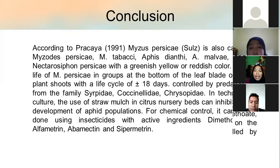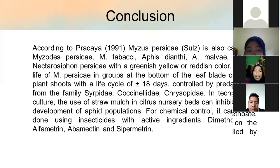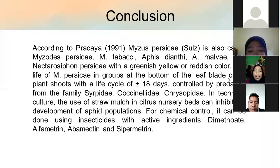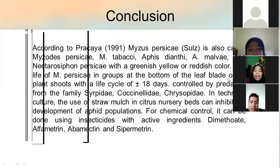Conclusion: According to Pracaya, Myzus persicae is also called Myzus tabaci, Aphis dianti, Malvae, and Nectarosiphon persicae, with a greenish-yellow or reddish color. The life of Myzus persicae is in groups at the bottom of the leaf blade or on plant shoots, with a life cycle of approximately 18 days. Control by predators from the families Syrphidae, Coccinellidae, and Chrysopidae; for cultural control, the use of straw mulch in citrus nursery beds can inhibit the development of aphid populations. For chemical control, insecticides with active ingredients dimethoate, alphametrin, abamectin, and supermectin can be used.